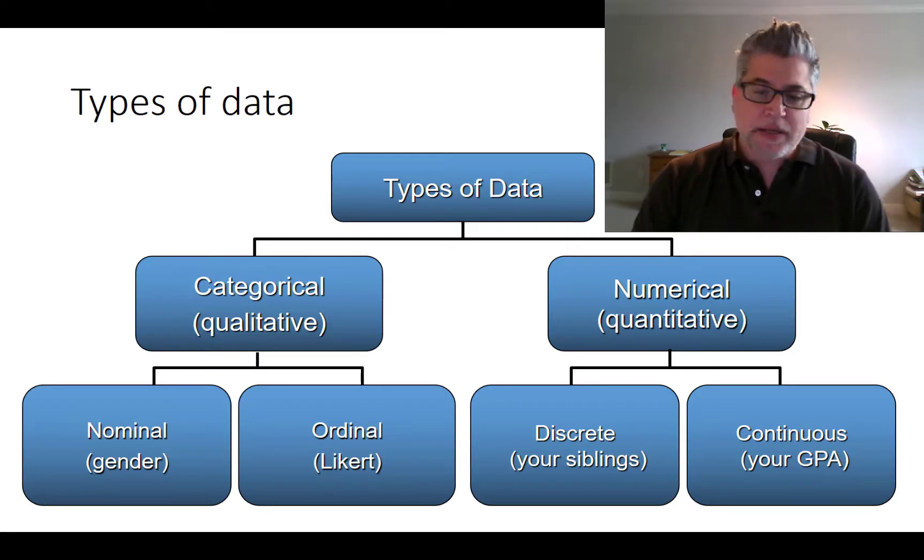Categorical variables can be split up into nominal versus ordinal. Nominal is a variable that has value in name only. If I choose to code gender as one if female, zero if male, those are strictly labels. It's not like the one is one more than the zero or infinite percentage higher than the zero. It's strictly a label. We call those nominal variables. They're a subcategory of categorical.